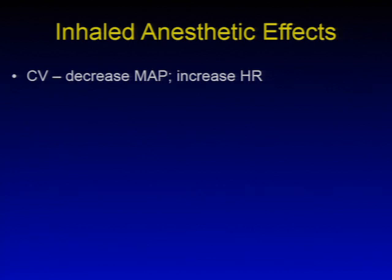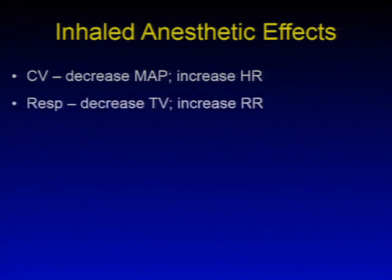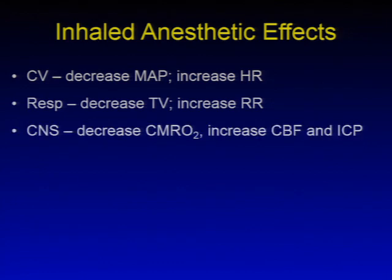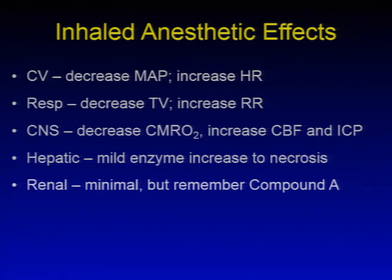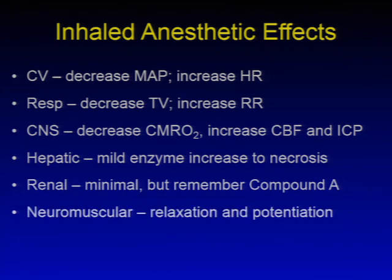This is just a summary and generalization overall. When we talk about the cardiovascular system, inhaled agents decrease mean arterial pressure and increase heart rate for the most part. For the respiratory system, you get a decrease in tidal volume and an increase in respiratory rate. With the central nervous system, you'll see a decrease in CMRO2 and an increase in cerebral blood flow and intracranial pressure. In the hepatic system, you can get anything from a mild enzyme bump to frank necrosis depending on the agent. Renal effects are minimal, though compound A with sevoflurane must be considered. Within the neuromuscular system, there is relaxation and potentiation — the agents will enhance and prolong neuromuscular blockade.